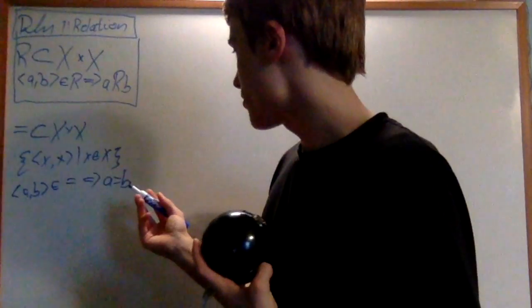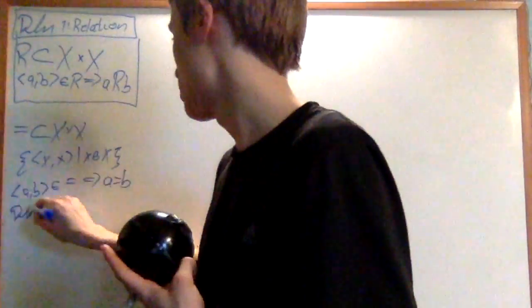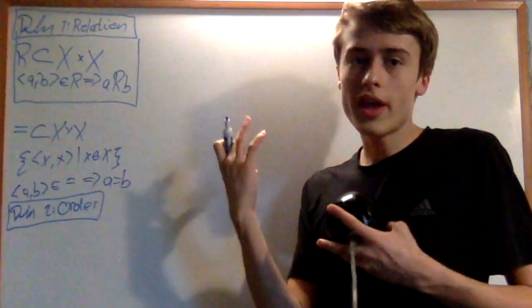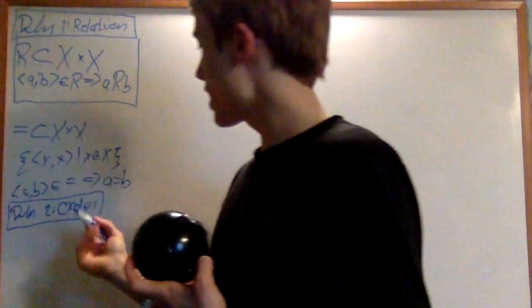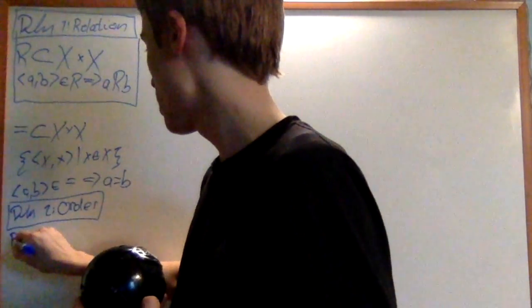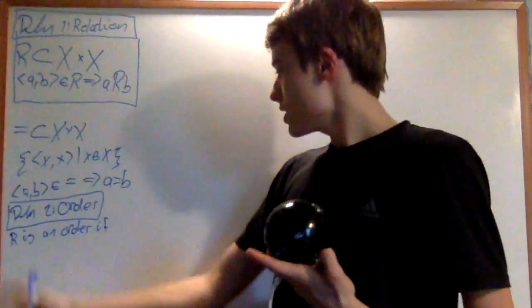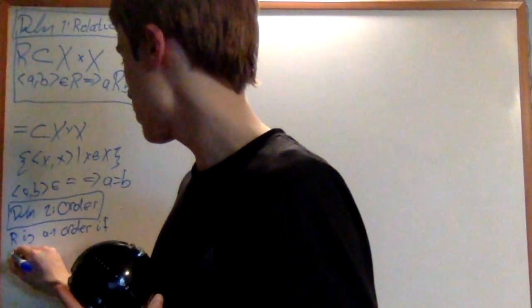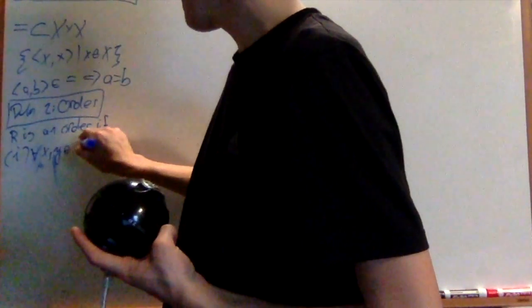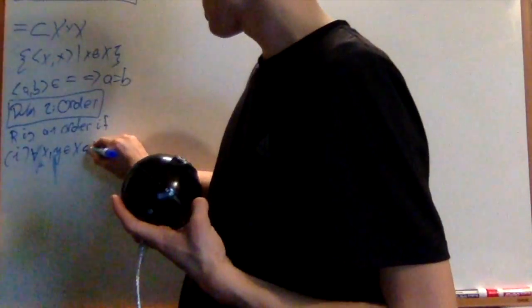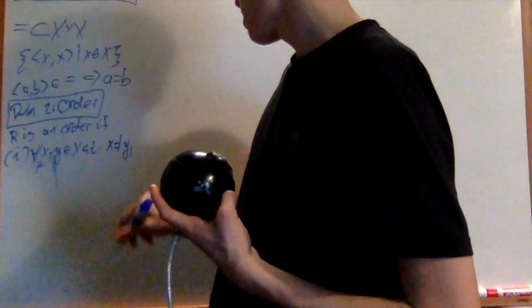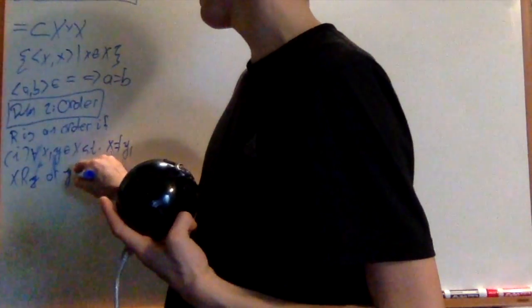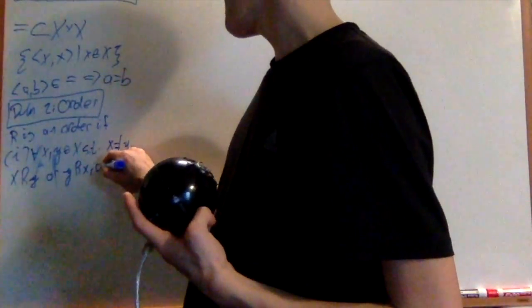Now let's go ahead and define an order. So what an order is, it's going to be a relation that gives you an order of the elements in it. So we say that R is an order. This is a relation R and we call it an order if, our first condition for any x and y an element of X such that x is not equal to y, xRy or yRx and not both.